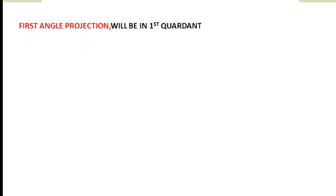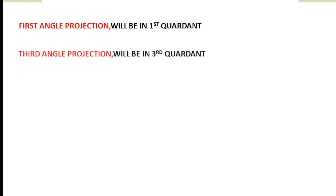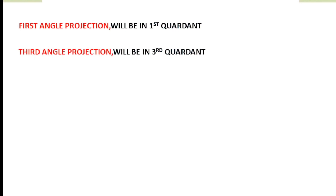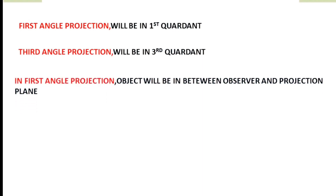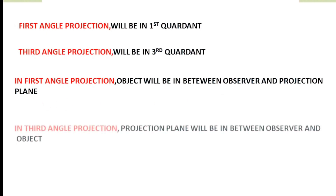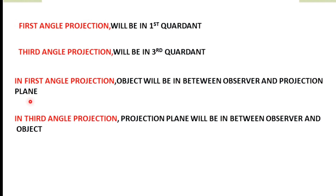First angle projection will be in the first quadrant and third angle projection will be in the third quadrant. In first angle projection, the object will be in between the observer and the projection plane. But in third angle projection, the projection plane will be in between the observer and the object.